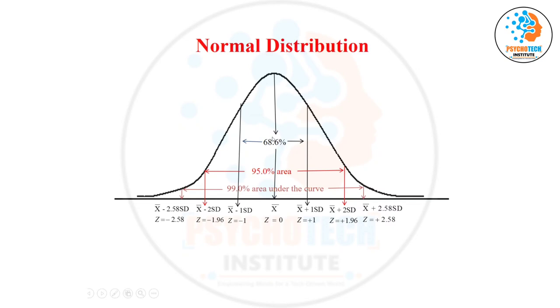You are not able to solve this area under the curve, so it's better to remember that. Mean plus minus one standard deviation will capture 68.6 percent data. Two standard deviations will capture 95 percent of the data, and three standard deviations will capture around 99 percent of the data.